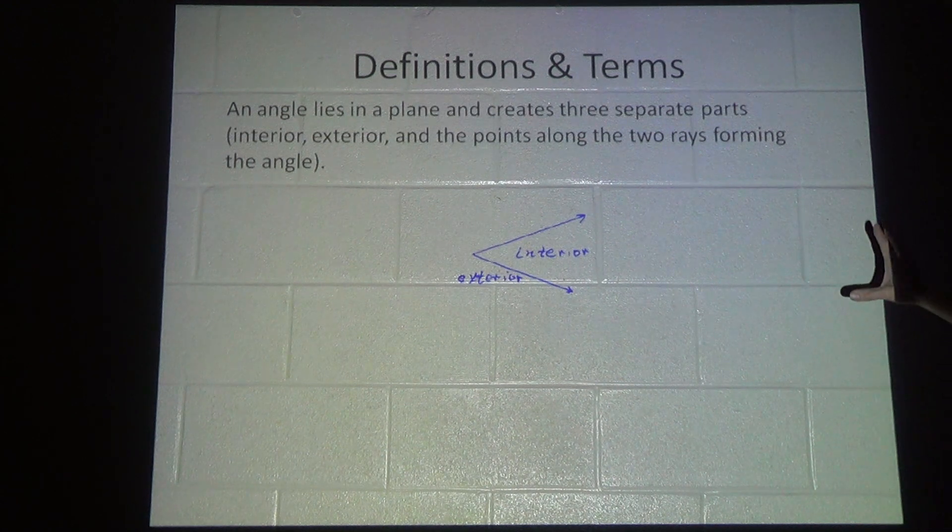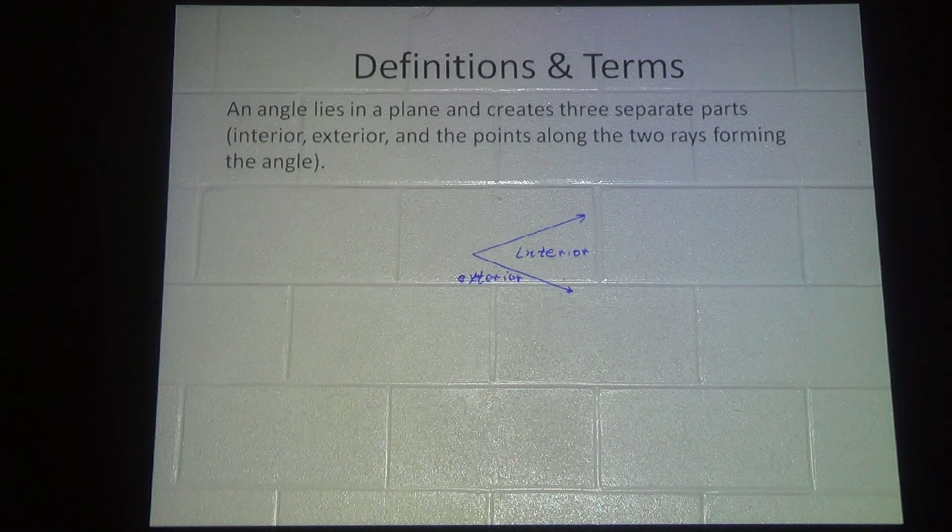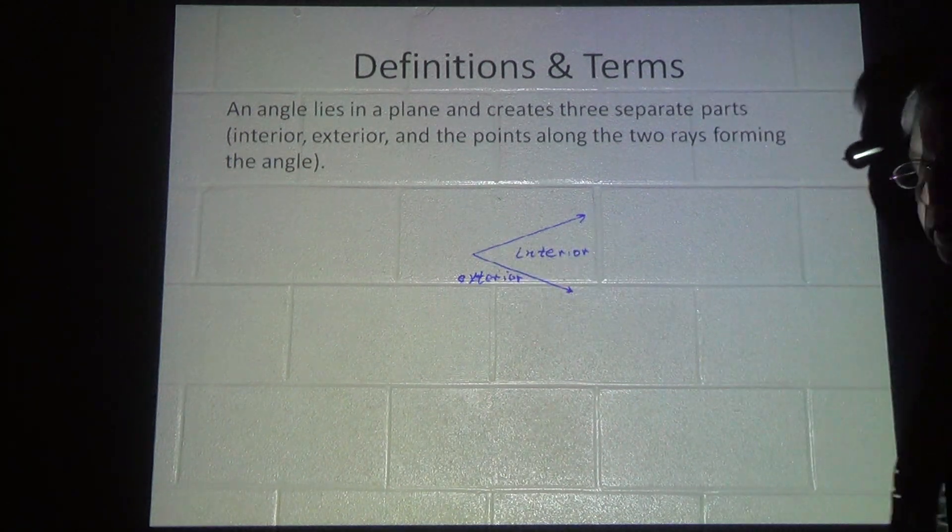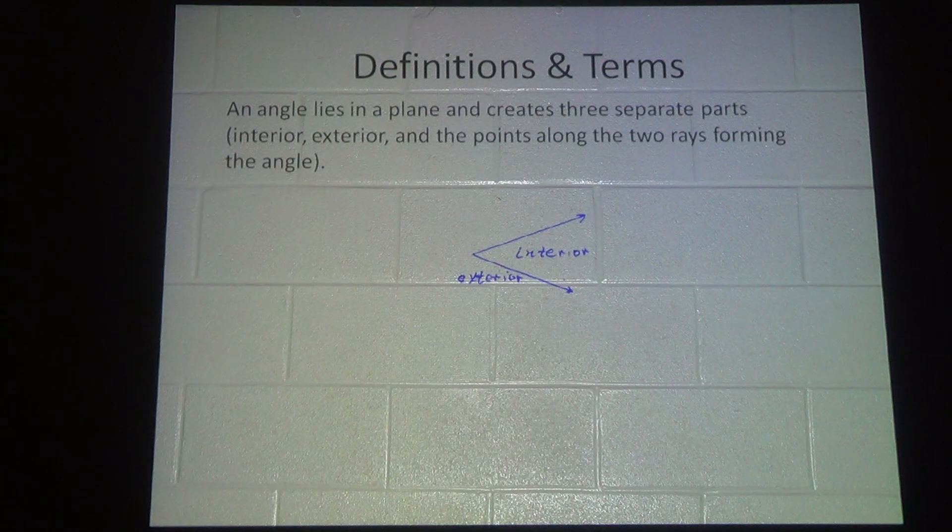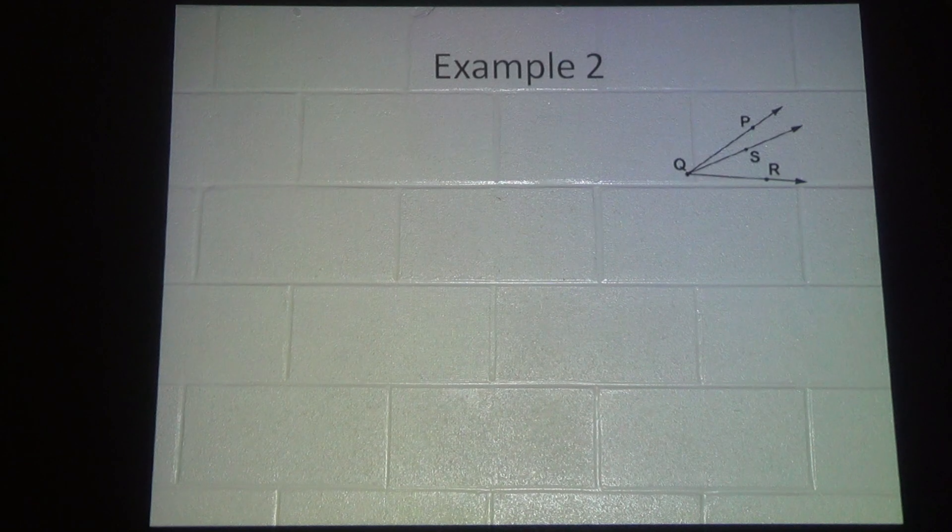An angle always lies in a plane and it creates three separate parts: the interior, the exterior, and the points along the two rays are the sides of the angle.